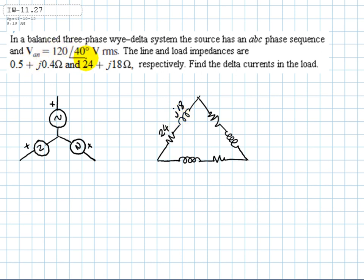And they also give us the value VAN. This is the neutral, and this should be A. This is 120 with 40 degrees volts. It's an ABC sequence, so this is A, this is B, and this is C.